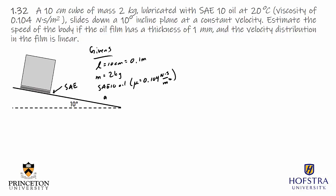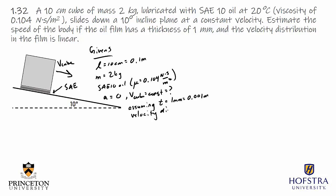The cube is moving at constant velocity, meaning the acceleration is equal to zero. We're asked to determine what that velocity is, assuming the thickness of the oil film is 1 millimeter, which equals 0.001 meters, and that the velocity distribution is linear.